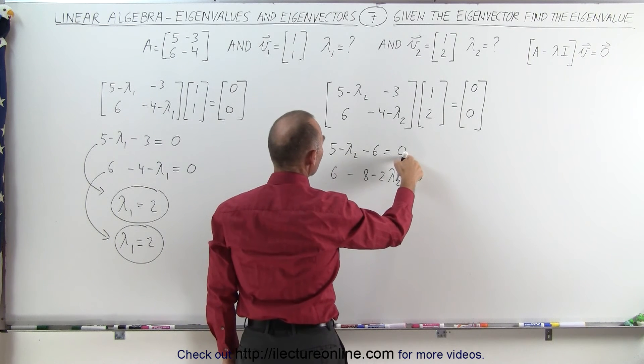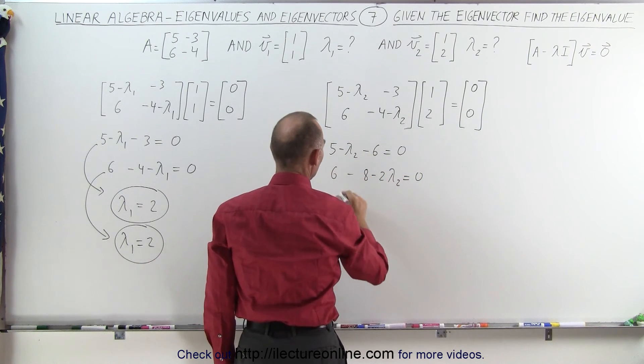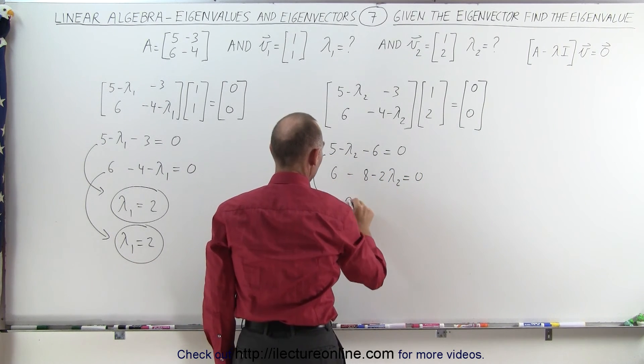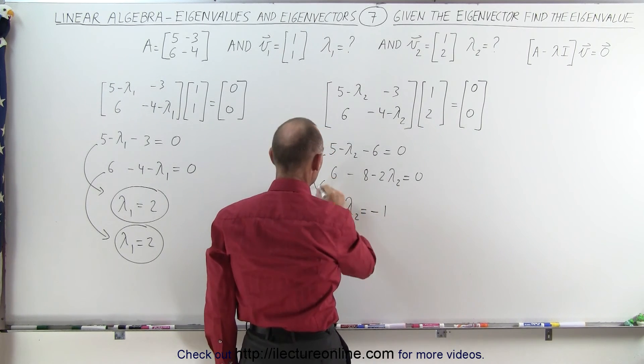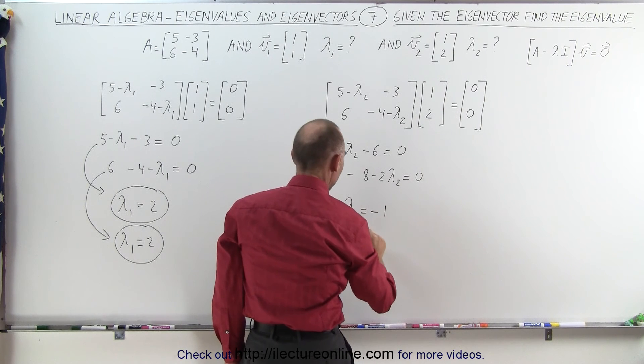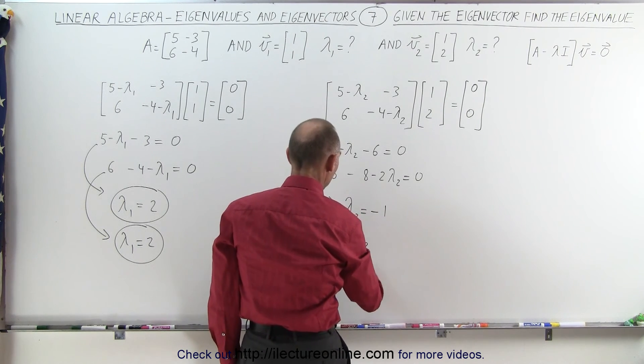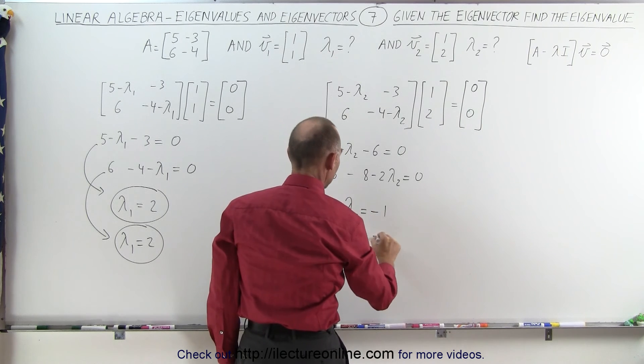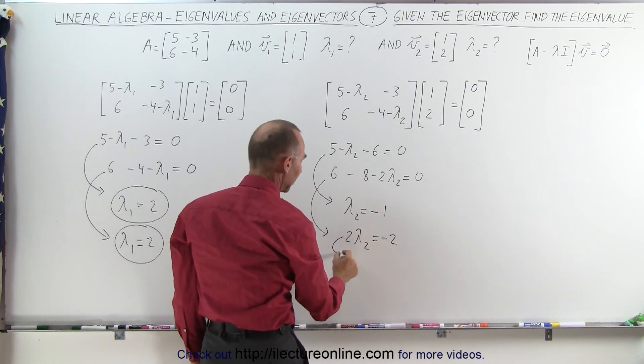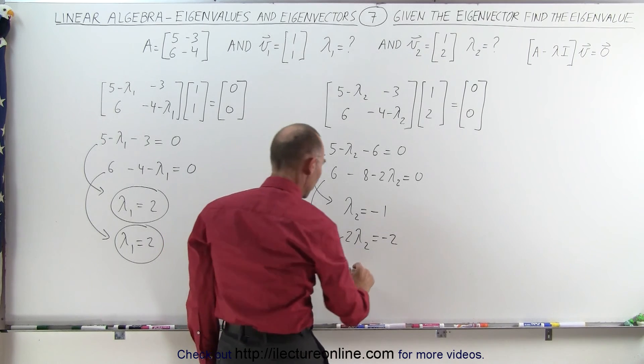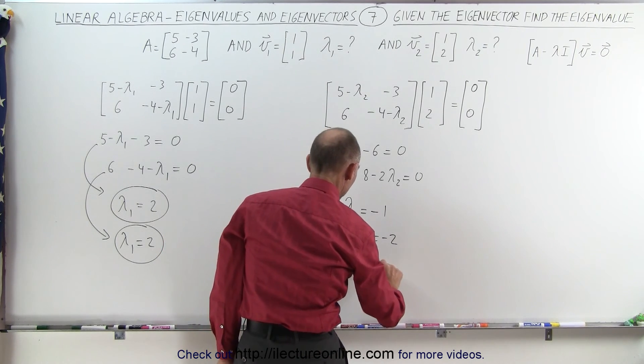Simplifying this, moving this across, 5 minus 6 is negative 1, so from the first equation we get λ₂ equals -1. From our second equation, moving this across, we get -2λ₂ becomes plus when moved to the other side, equals 6 minus 8, which is -2. If we divide both sides by 2, we get λ₂ equals -1.